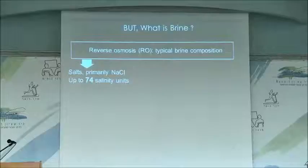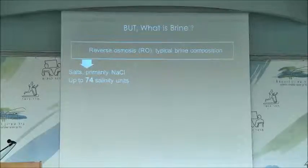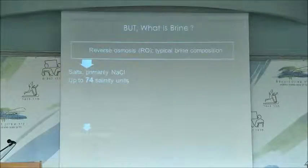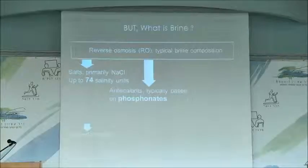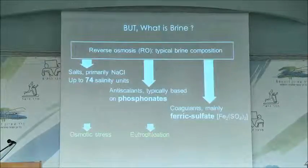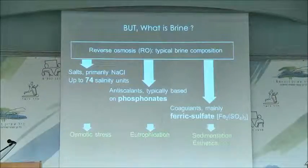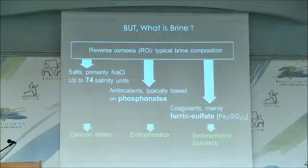What is in brine? First, of course, higher salinity, which may cause osmotic stress. We also have antiscalants, which in most cases come in the form of phosphonates that may cause eutrophication. Additionally, coagulants such as ferric sulfate or ferric chloride may enhance sedimentation in the aquatic environment, which can cause aesthetic problems.